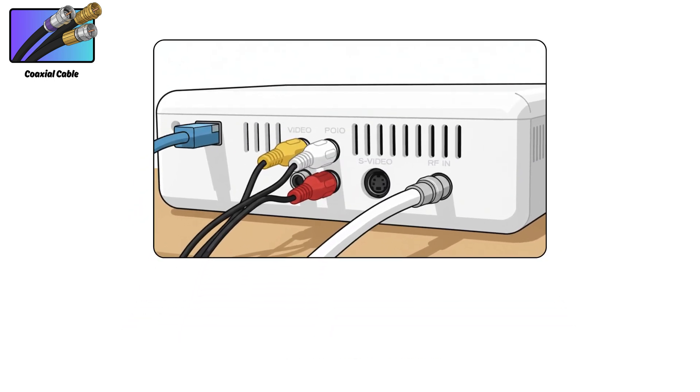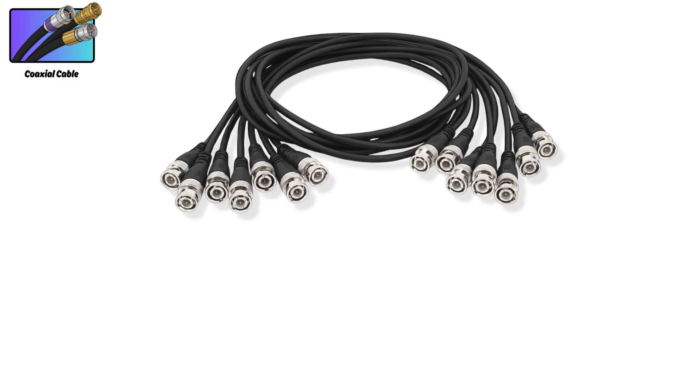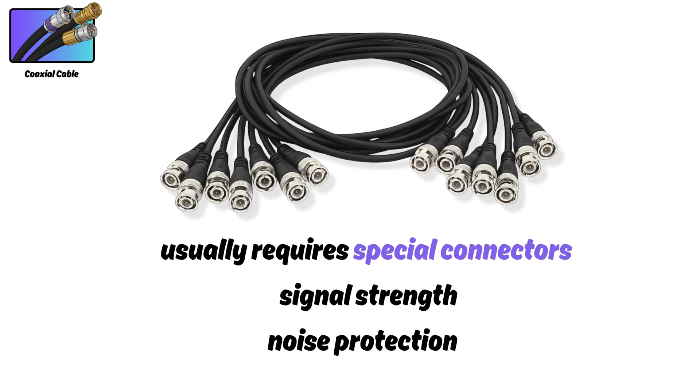Because of its heavy shielding, coax is extremely stable in noisy environments where power cables, motors, or radio signals would normally interfere. It's thicker and less flexible than ethernet, and usually requires special connectors, but when you need long distance, signal strength, and noise protection, coaxial cables are still hard to beat.